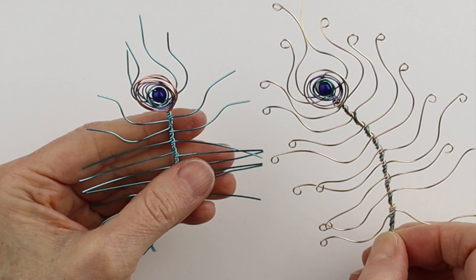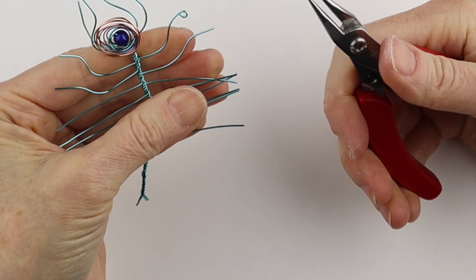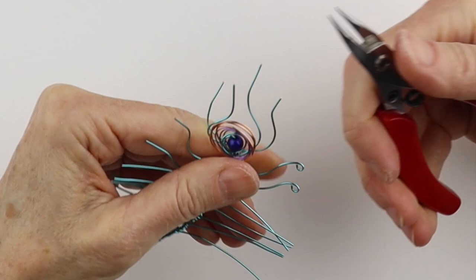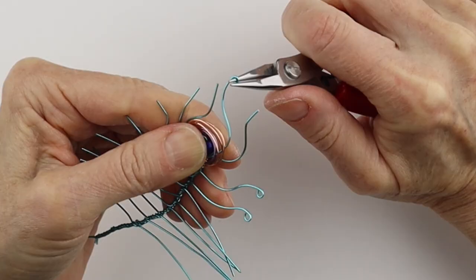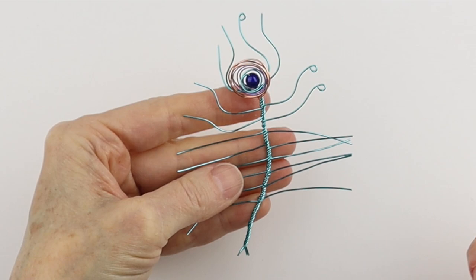You can make little loops on the end like in this one or you can leave them straight like that. So if you do want to do the loops you're just going to take your round pliers and bring them around like that. So just hold the end, flick of the wrist, bend it down at the top too. Just gives it a little bit of interest. You could even put little beads at the ends as well. So we're going to work our way around and make all the loops.